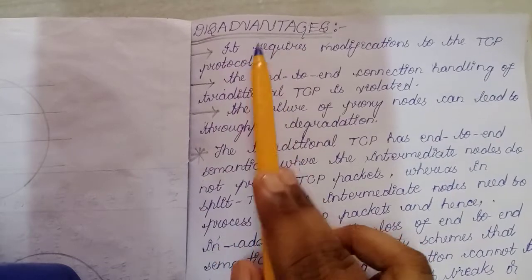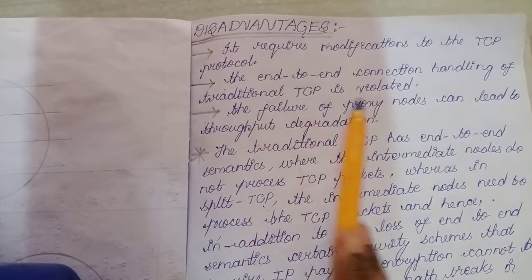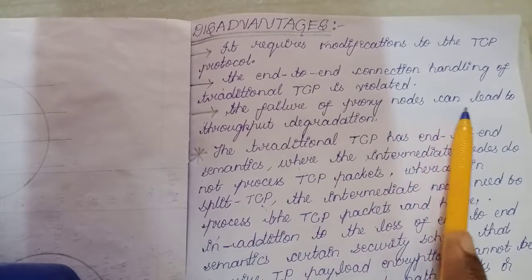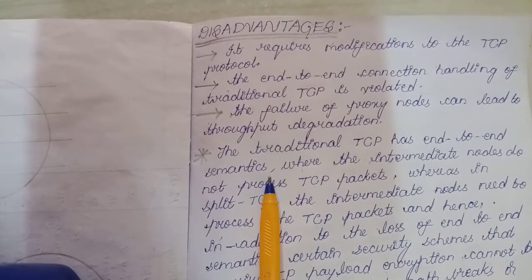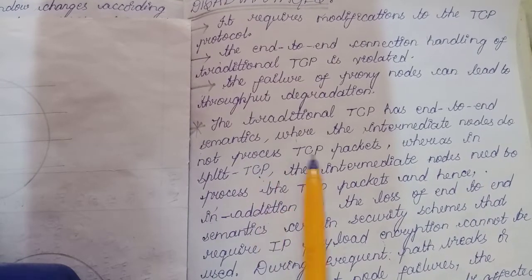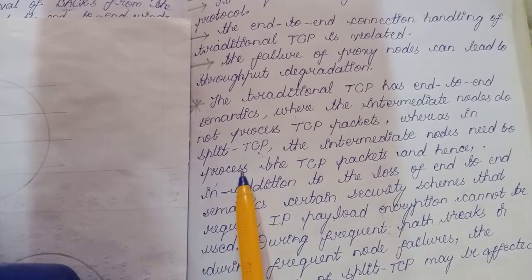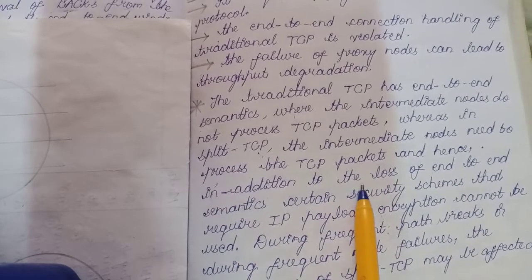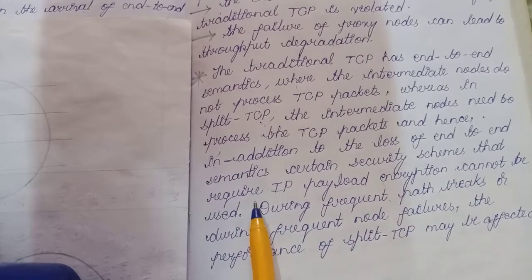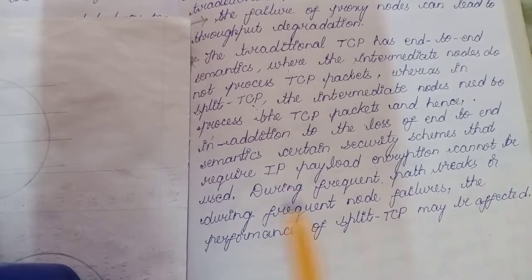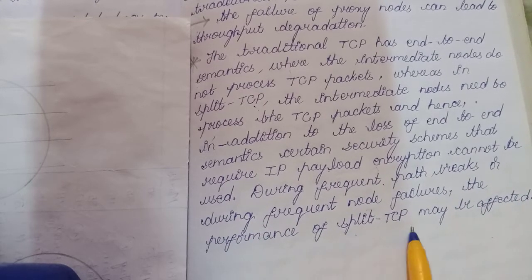The disadvantages of Split TCP are: it requires modifications to the TCP protocol; the end-to-end connection handling of traditional TCP is violated; and the failure of proxy nodes can lead to throughput degradation. Traditional TCP has end-to-end semantics where intermediate nodes do not process TCP packets, whereas in Split TCP intermediate nodes must process TCP packets. In addition to the loss of end-to-end semantics, certain security schemes requiring IP payload encryption cannot be used. During frequent path breaks or node failures, the performance of Split TCP may be affected.